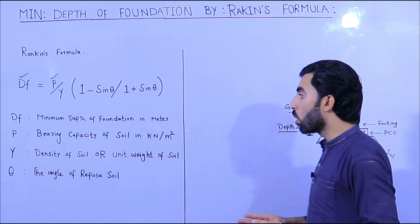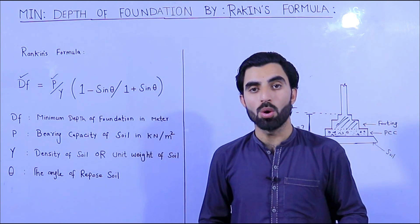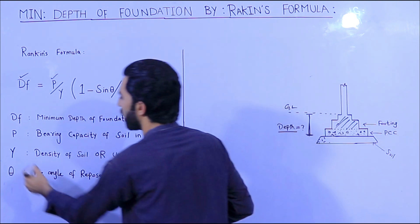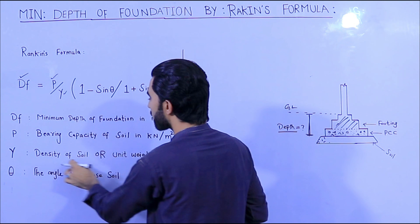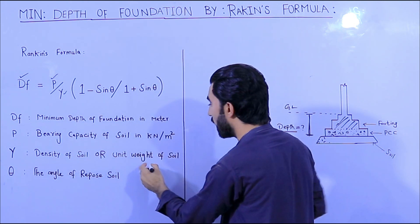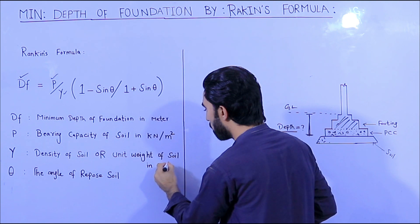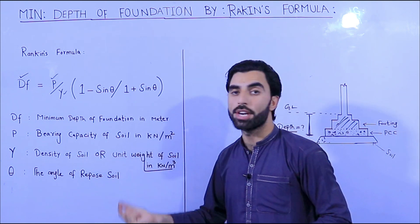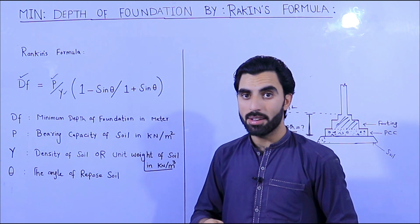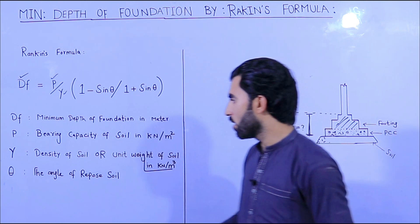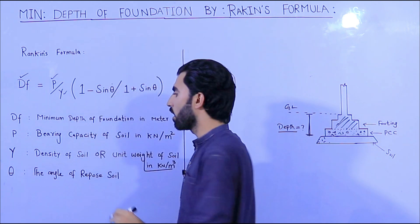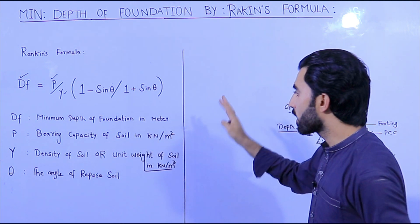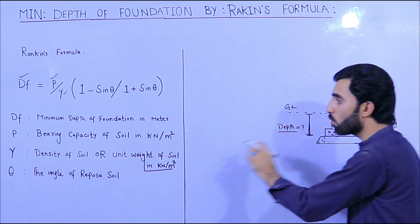What should be the bearing capacity of soil and how will you know it? I will guide you about this. Now we have γ, which is the density or unit weight of soil in kilonewton per meter cube — the unit weight of the soil in which you are making the excavation for foundation. And θ is the angle of repose of the soil.